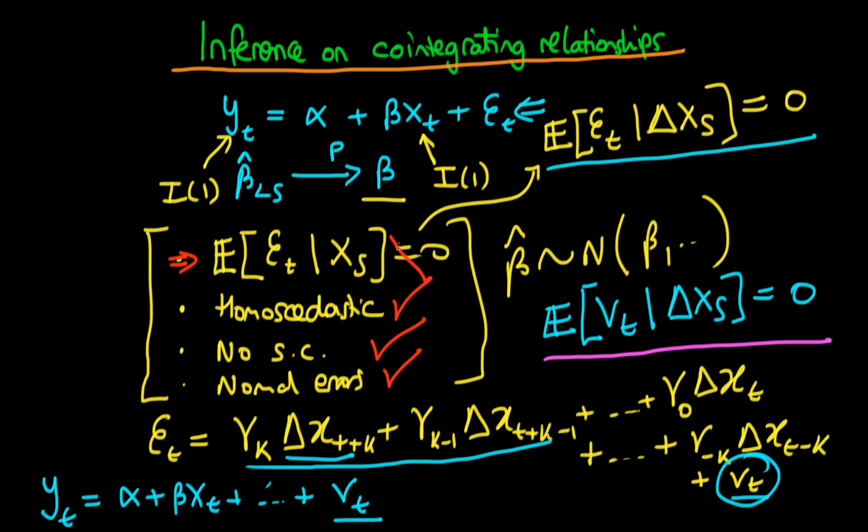So we actually will have this first assumption being upheld, and if we have that first assumption being upheld and assuming we don't have serial correlation or heteroscedasticity and assuming we have normal errors, then we can actually go ahead and do inference on a model.